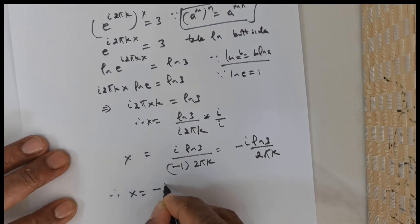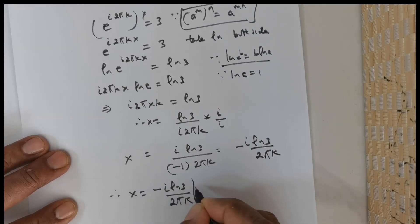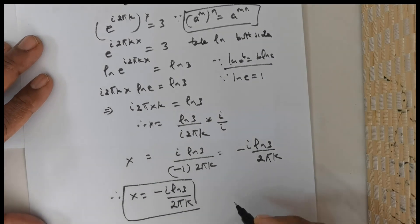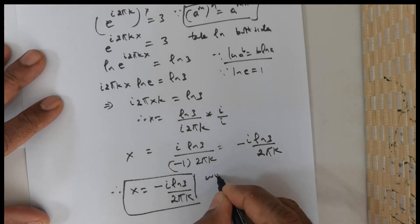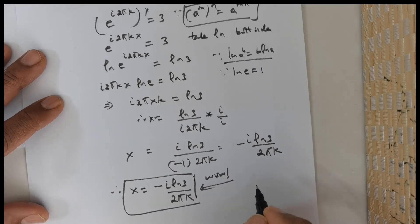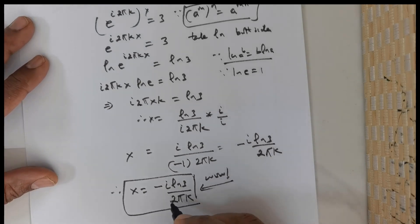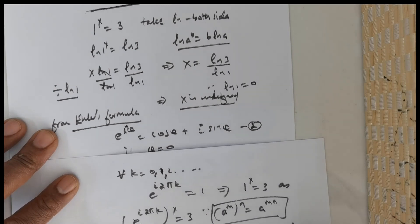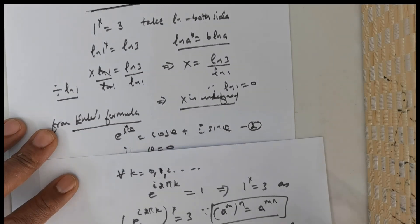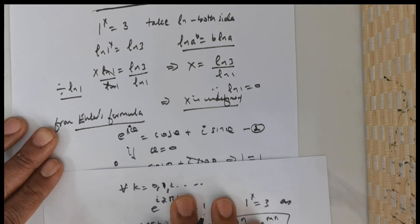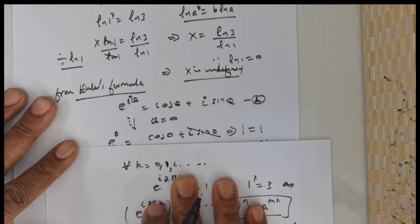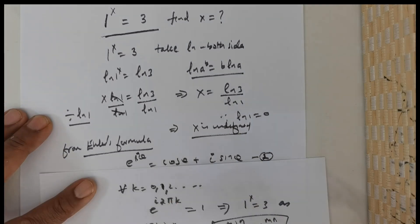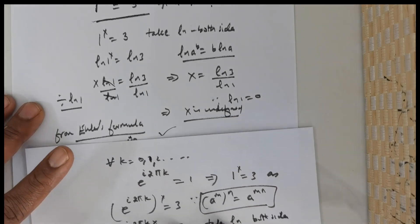Therefore x is equal to negative i times ln 3 divided by 2 times pi times k. Now many would be saying wow, this is a great way to get the solution. But the most important thing is the solution is in complex form — it's not a real solution. Now where did I create a bug, or where did I introduce a bug? Did you catch that? All of these steps are perfectly fine.